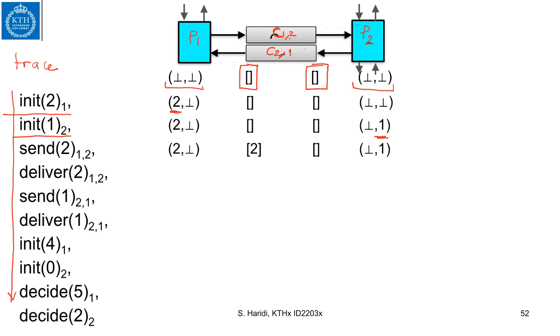Then we do a send. So this is a send on channel c12, so the value here is now in the network. Then we are going to do a delivery now. So here is delivery. So the delivery will make this channel empty and then deliver the value at position one in this vector.